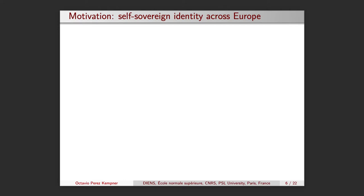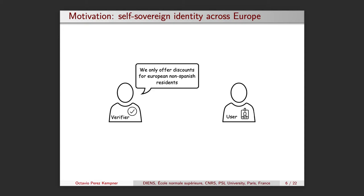We have a seller offering discounts for European non-Spanish residents. A user could claim its French, but that would give away too much information to the verifier. Furthermore, if credentials are issued by home countries, no matter what attribute users decide to disclose with the verifier, their home country will be leaked.